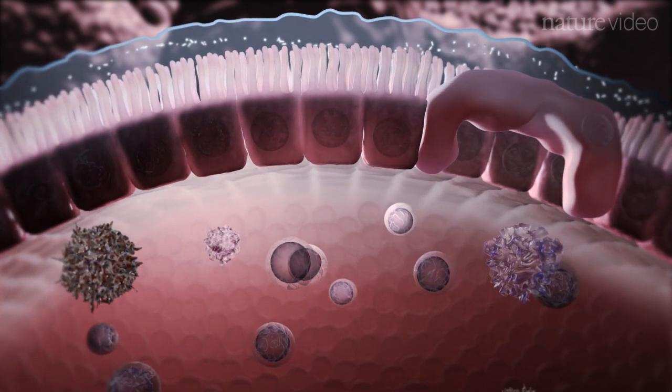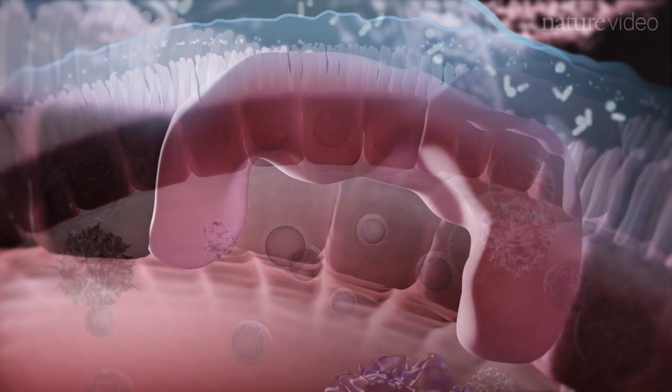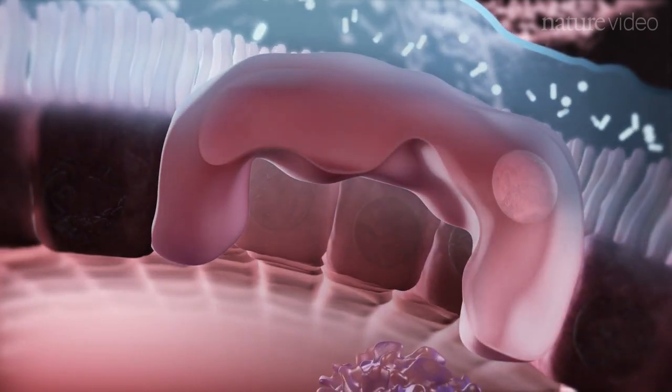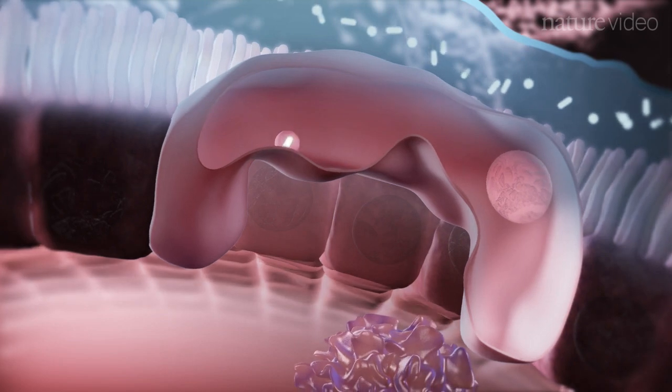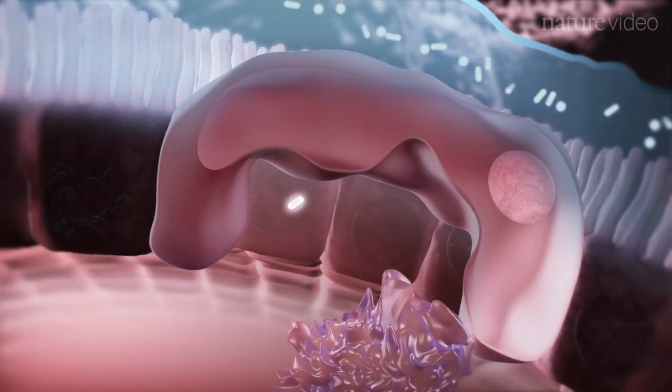To facilitate this, the Peyer's patch has a much thinner mucus layer as well as specialized phagocytic cells called M-cells which can transport material across the epithelial barrier via a process called transcytosis.